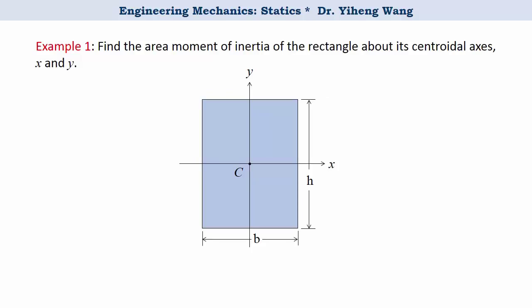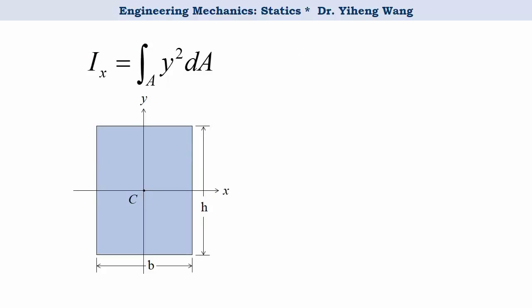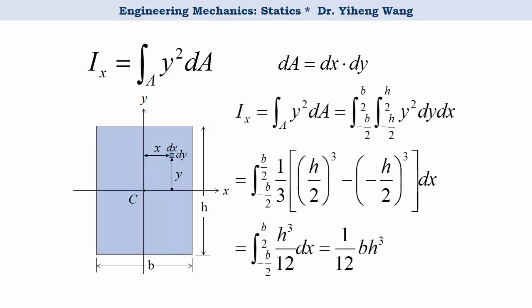Now let's look at an example to see how we use the equations to calculate the area moment of inertia. We need to determine the area moment of inertia of a rectangle about its centroidal x-axis and y-axis. We start with a differential element with sides dx and dy located at an arbitrary position (x, y). Its area dA is dx times dy. We plug it into the equation and integrate. Because this rectangle has width b and height h, we integrate along y from negative h/2 to positive h/2, and along x from negative b/2 to positive b/2, and we get (1/12) b h³.